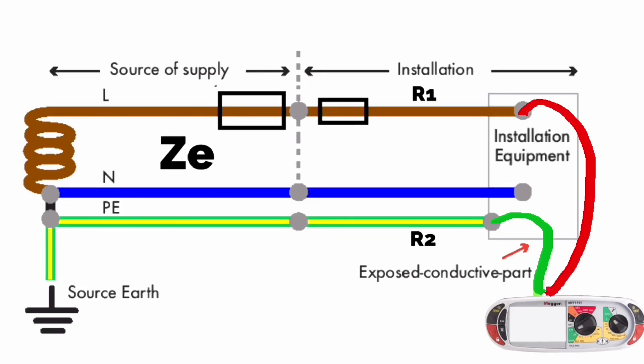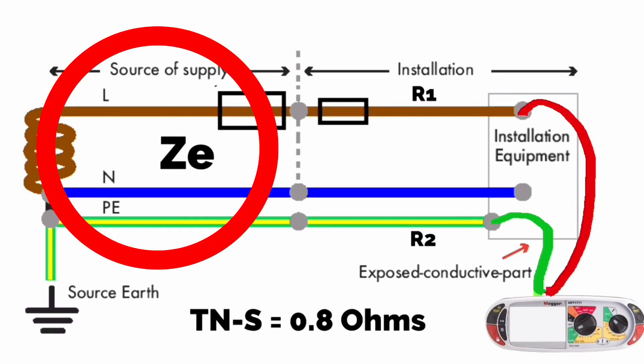The maximum impedance of the supply authority's cable depends on the earthing arrangement. The drawing shown here is a TNS earthing arrangement. The supply authority's maximum impedance of that cable ZE is 0.8 of an ohm.